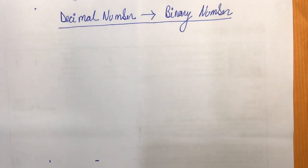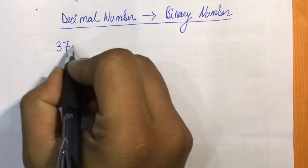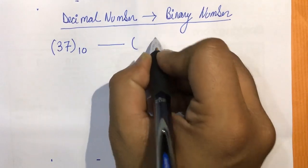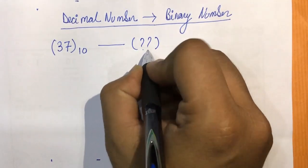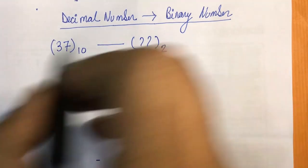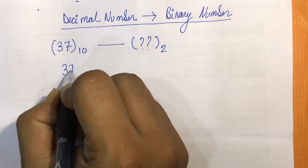Okay, let's do the conversion for the first one: decimal number system to binary number system. Let's take a number as 37. Since this is base 10, we need to convert it to binary number. Binary number will have base 2 because of 0 and 1.